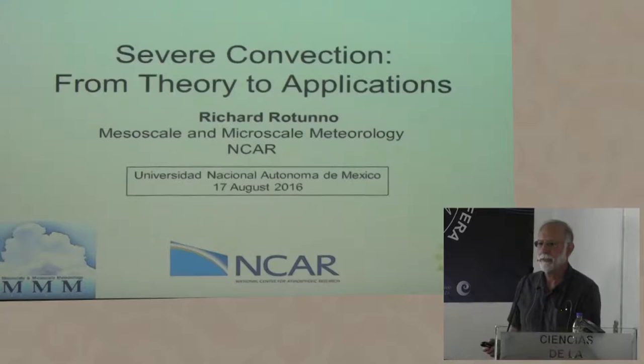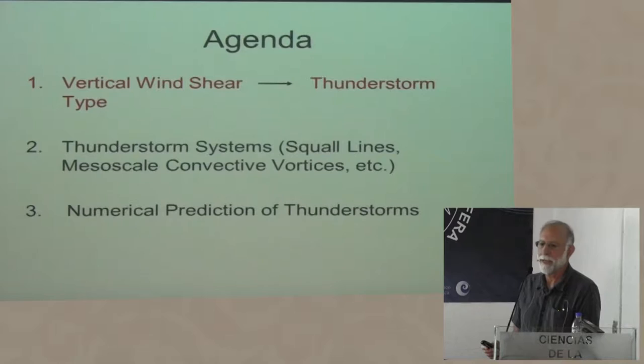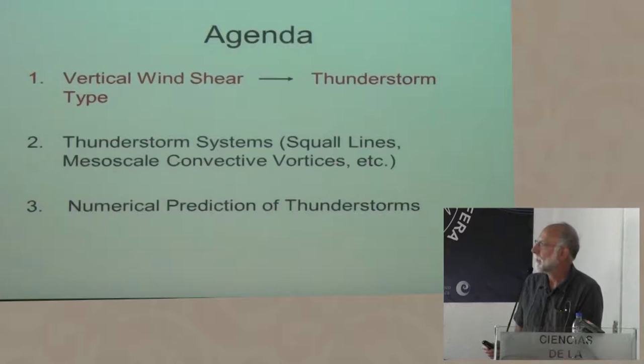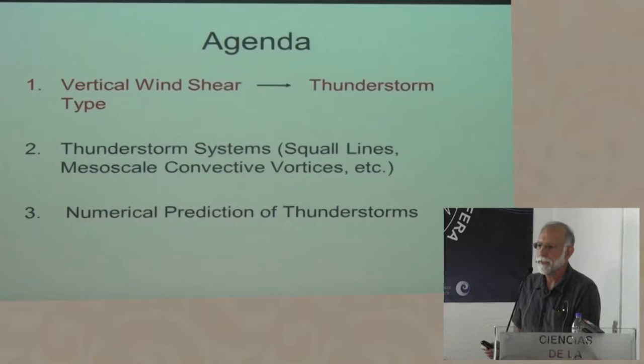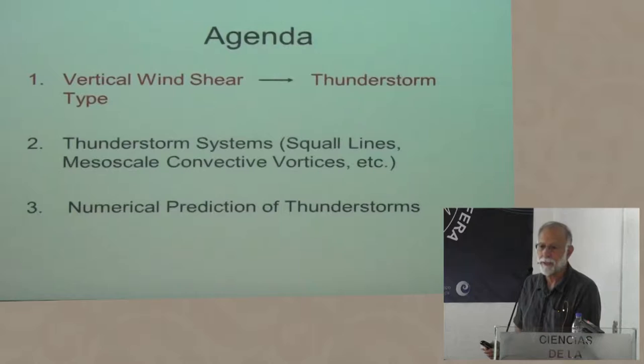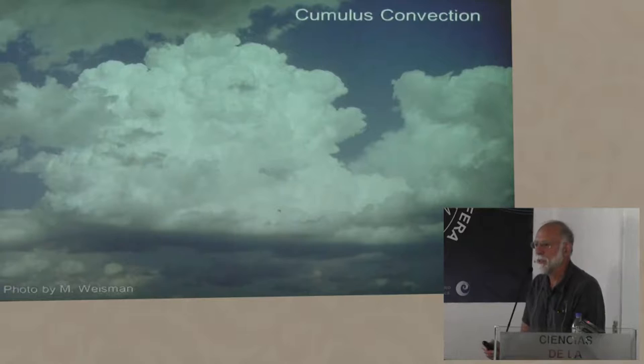Let's take a look at the agenda. Our agenda is to go back to the earliest basic building blocks of severe convection. One of the things I was involved with in the 1980s was looking at how vertical wind shear — ambient vertical wind shear — can affect the type and organization of convection that occurs depending on the ambient vertical wind shear.